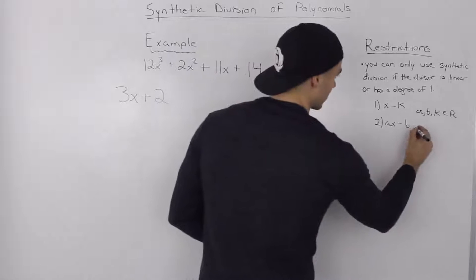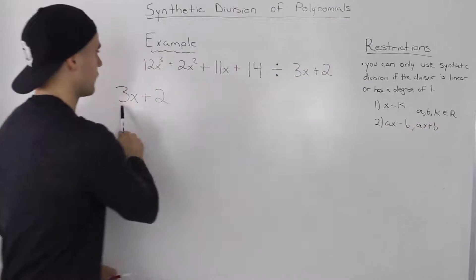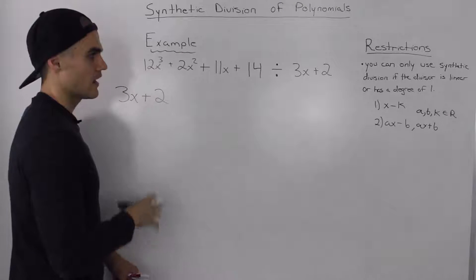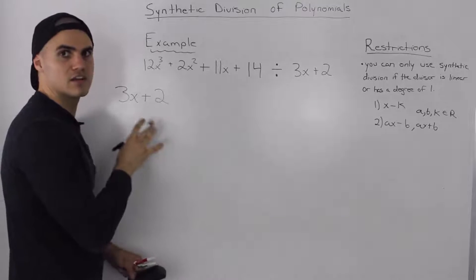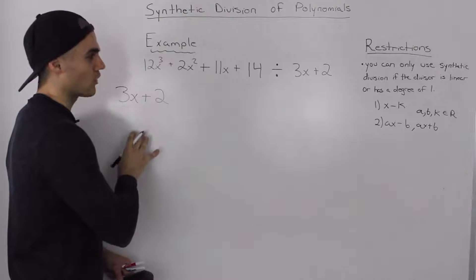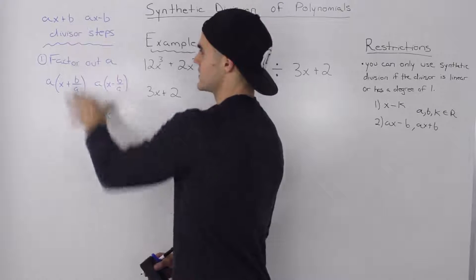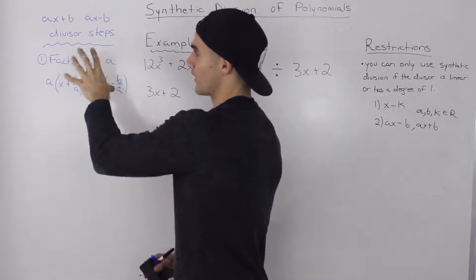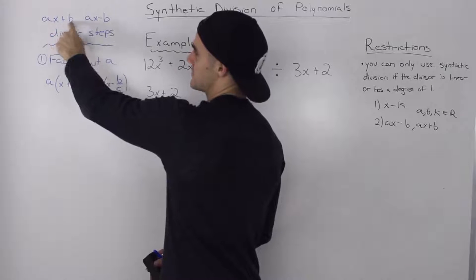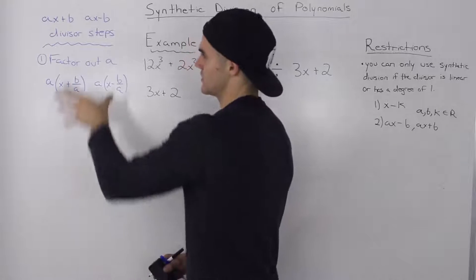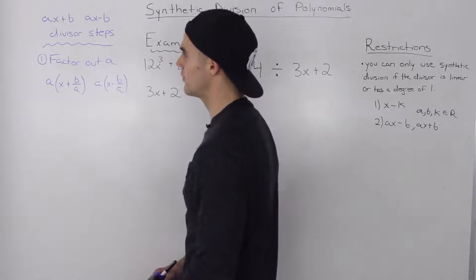We should also note ax plus b as a possible form. So in this case, our divisor 3x plus 2 is taking the form ax plus b. The process is going to be a little different because we first have to manipulate the divisor before going into the synthetic division process. I'm going to write out the series of steps we undertake when we have an ax plus b or ax minus b divisor — I suggest you write these out because the process is a bit more complex.